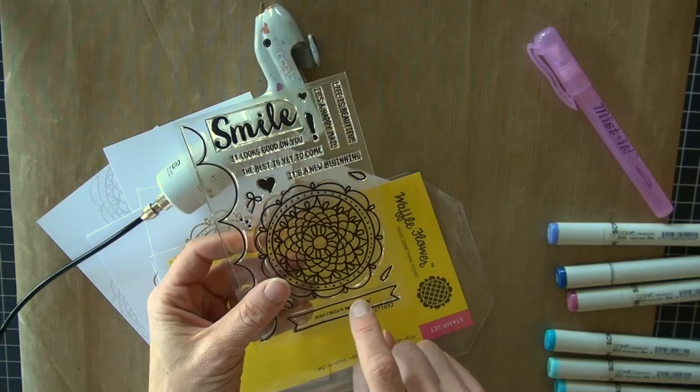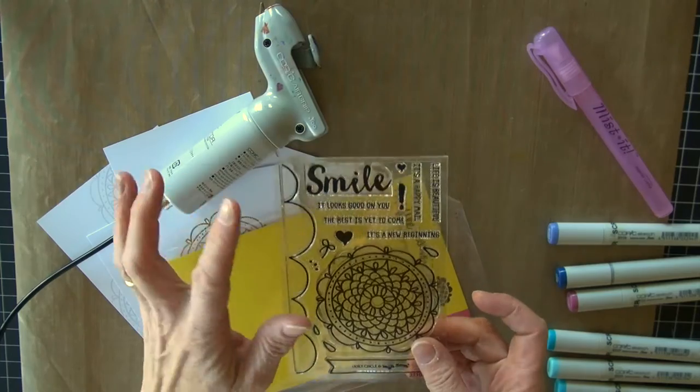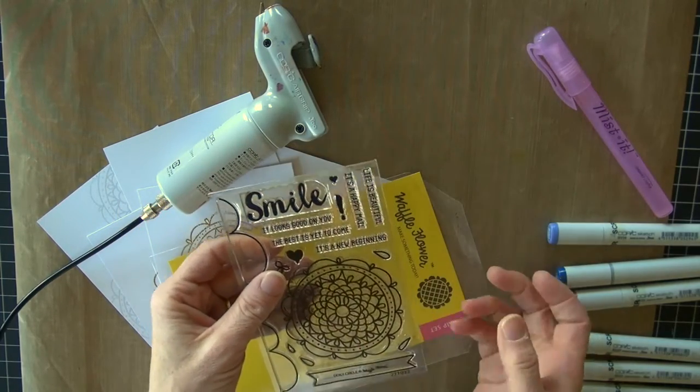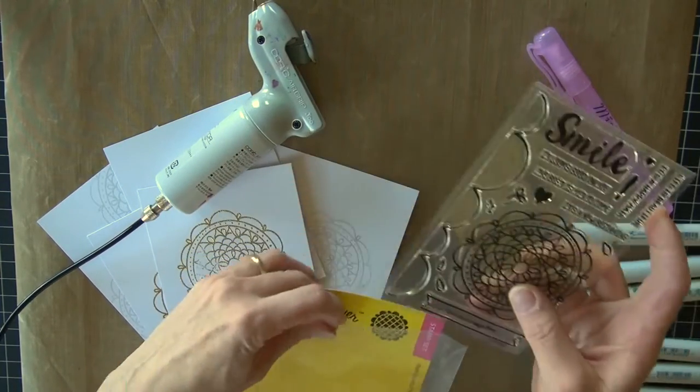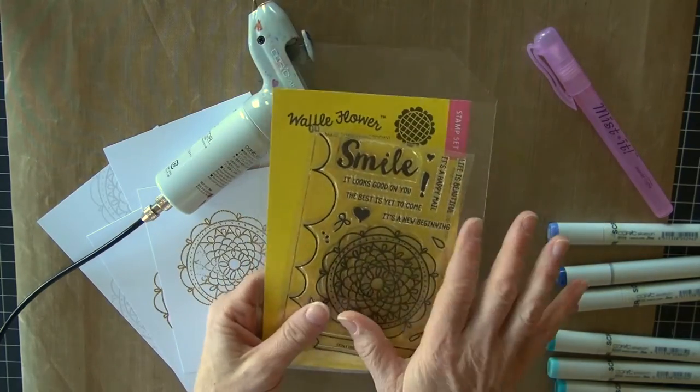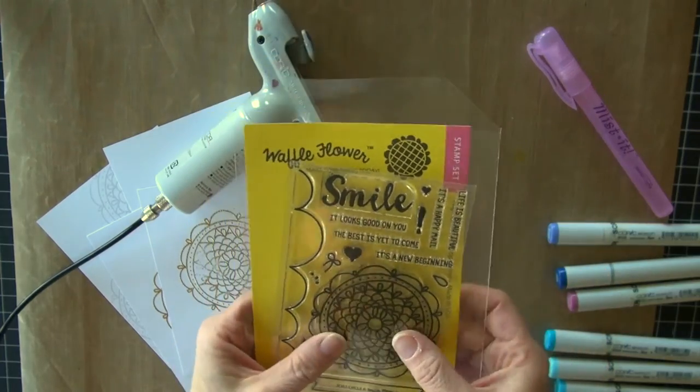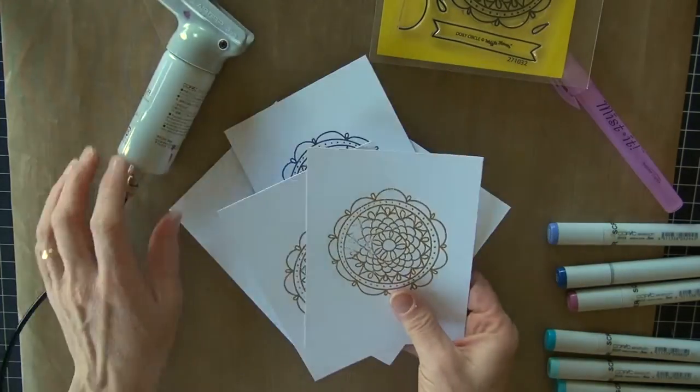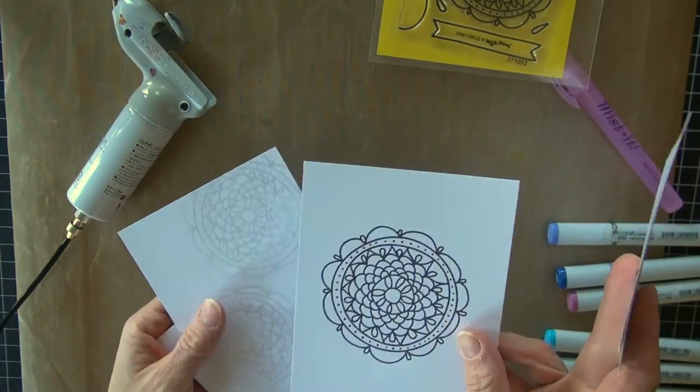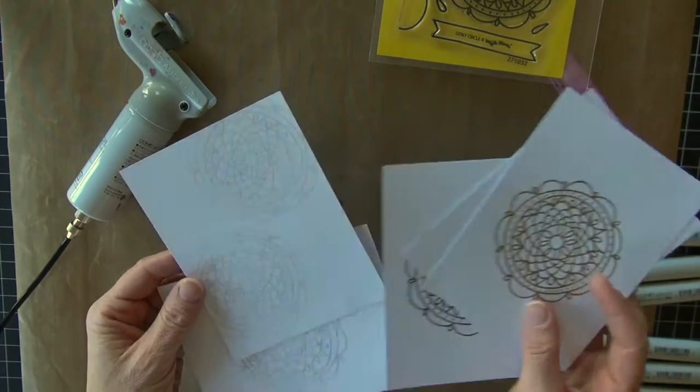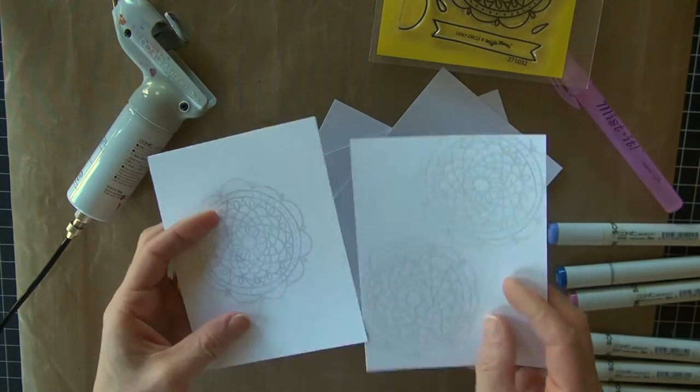The stamp set is called Doily Circle. It's got some great little sentiments, a nice brush style smile and a banner that you can put those sentiments in and a loose scallop. So all sorts of fun little pieces to this, but I'm especially excited about this really pretty doily stamp. So what I have done is stamped and embossed in gold and then just stamped in my black memento and then also stamped and embossed in clear embossing.